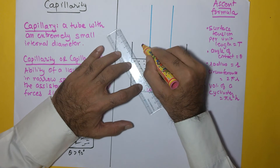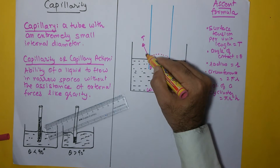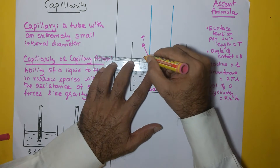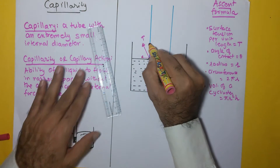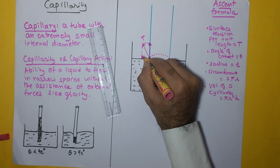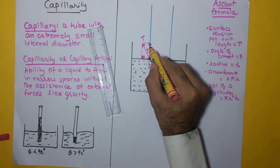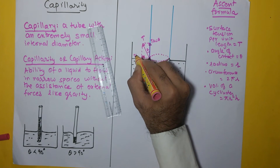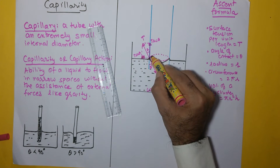The force of surface tension is applied by the water onto the tube, and by Newton's third law the tube applies an equal and opposite force T back on the water. This force T can be broken up into its two components: a vertical component T cosθ and a horizontal component T sinθ.